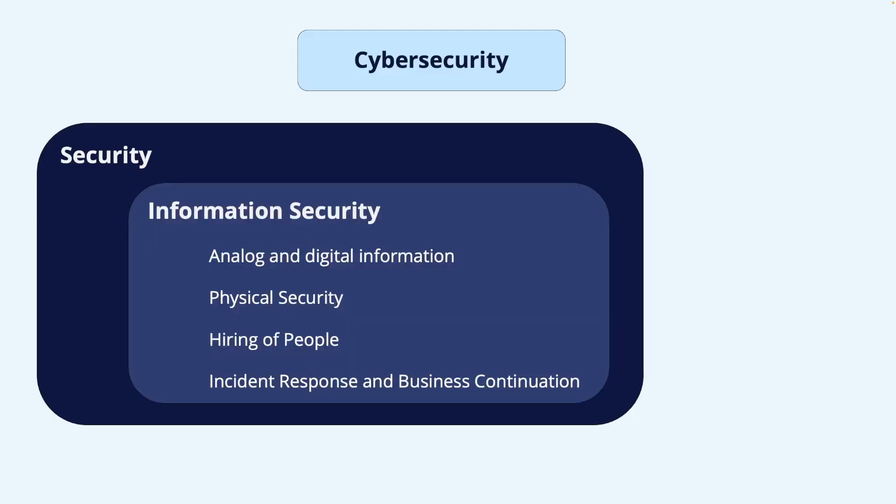Let us narrow it down to information security. Information security is about protecting information assets. This includes both analog and digital information. For the digital information, this is stored on a personal computer, a dedicated server, or in a cloud environment. Information security includes, for example, physical security of the premises, and how we hire people, how we plan for and respond to incidents, and how we make sure that the business can continue its operation in case of a security breach.